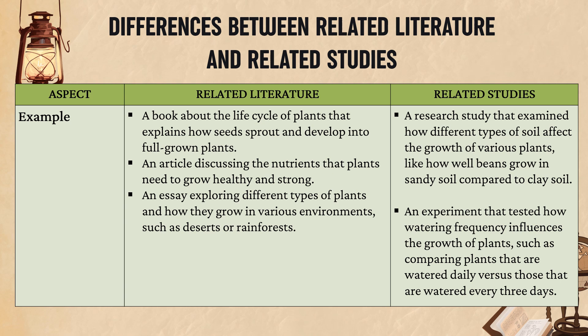By example, in related literature: imagine you want to do a science investigatory project about how plants grow. You might read a book about the life cycle of plants, an article discussing the nutrients that plants need to grow healthy and strong, and an essay exploring different types of plants and how they grow in various environments such as deserts or rainforests. All of these written works are examples of related literature because they provide the background information you need for your project.